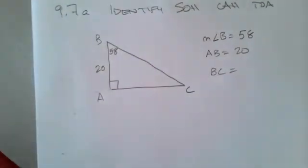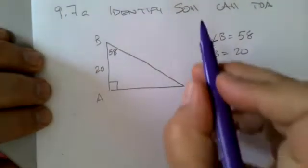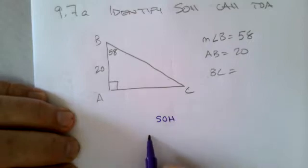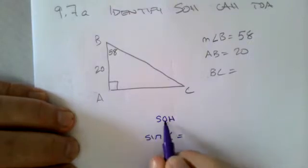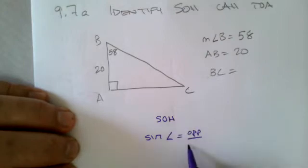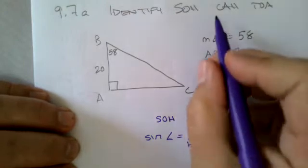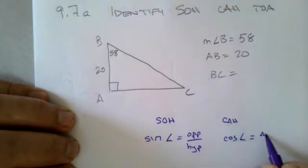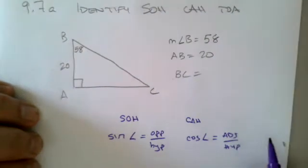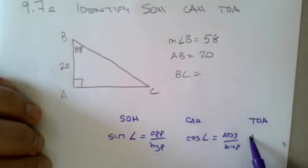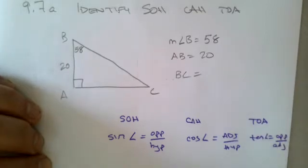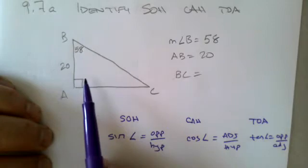In this step, all we're doing is we're identifying whether it's SOH, CAH, or TOA. And you'll remember that SOH stands for the sine of an angle is equal to the opposite over the hypotenuse. So the whole trick here is figuring out which sides we're dealing with here.